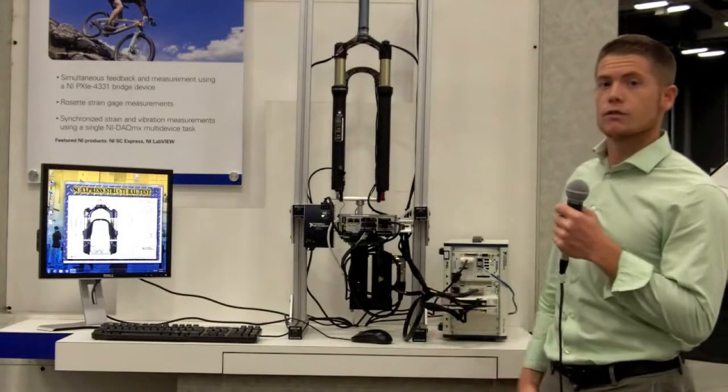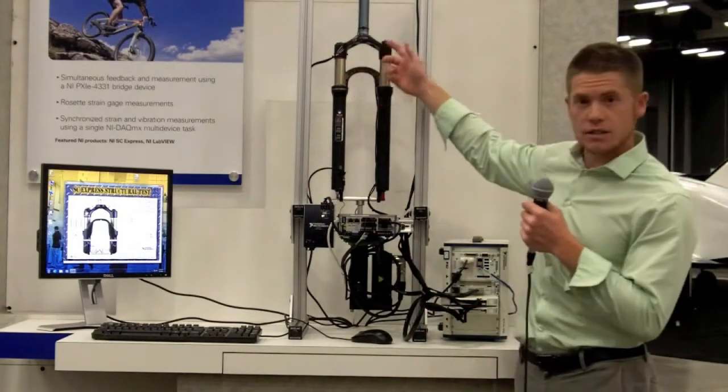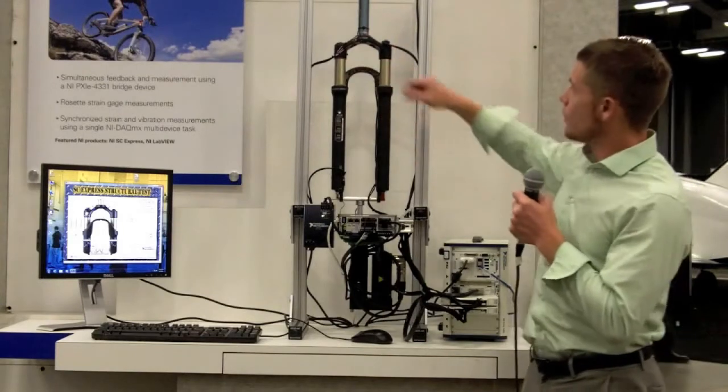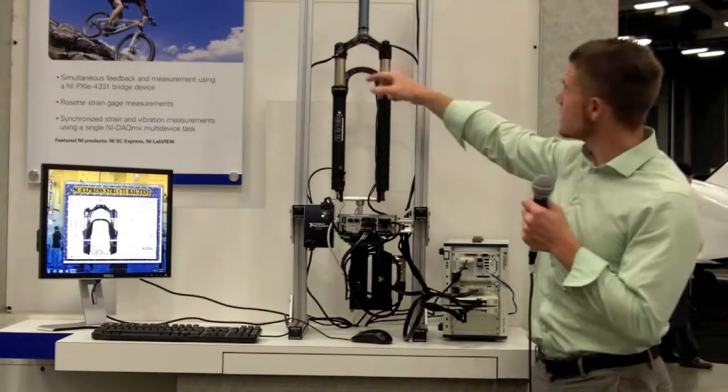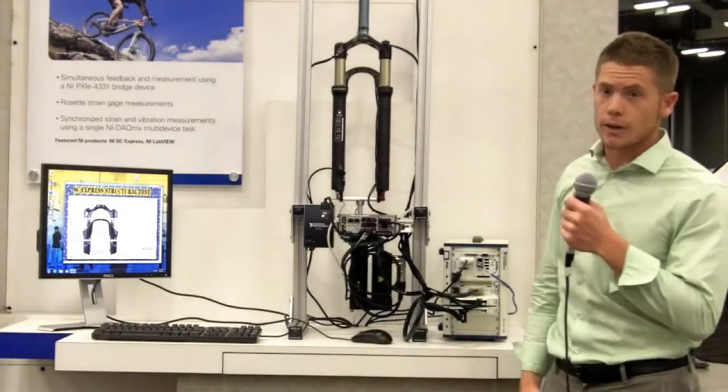And some of the benefits of that are first and foremost to use mixed measurement types. So in this demo, you'll see strain gauges affixed to the bike fork for principal strain using rosettes, as well as load cells to measure the load on the top and the bottom of this particular fork.